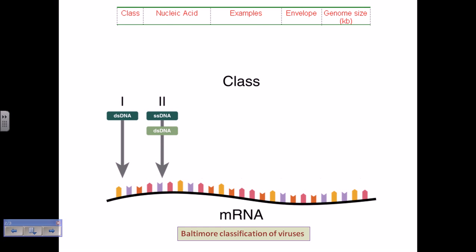Class 2 viruses are single-stranded DNA viruses. These must also produce mRNA. They do so by taking the single strand of DNA as a template strand and producing another complementary strand, making it double-stranded DNA. Then this double-stranded DNA can easily transcribe mRNA using the general transcription process.